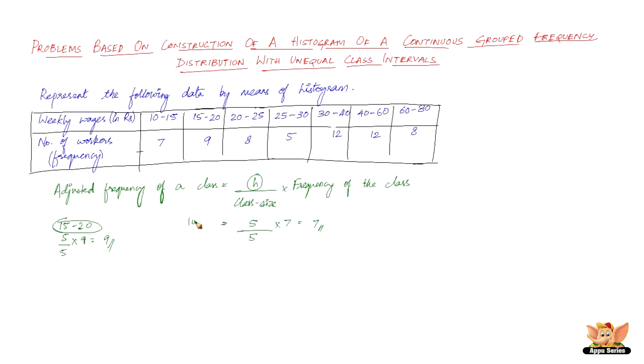Now this was for 10 to 15. And then let's do 20 to 25. 20 to 25 we have again just 5. So it's 5 by 5 into 8. So we have 8 again. Let us do 25 to 30. 25 to 30 is again the class size is 5. So it's 5 by 5 into 5 which gives us 5.